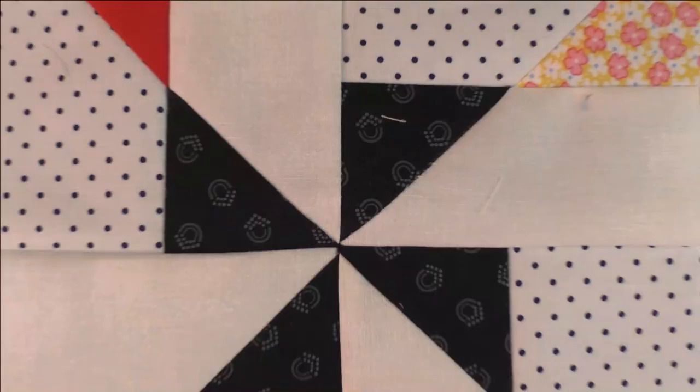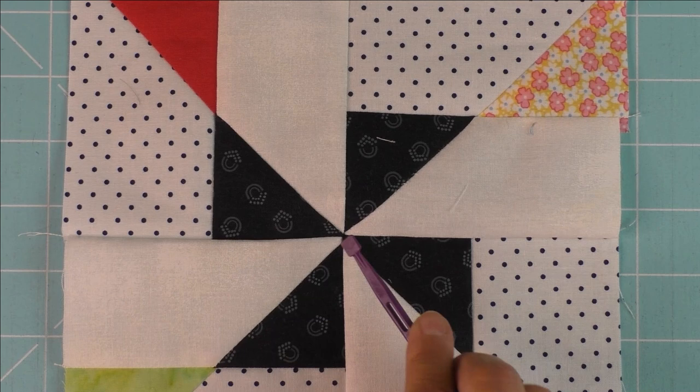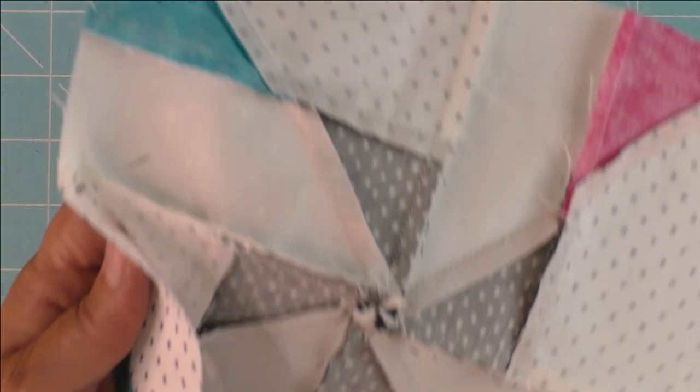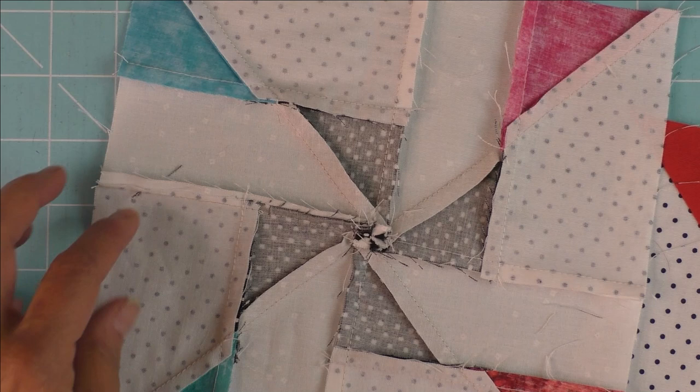Then with your iron, hit it with your iron right there and then press to continue this direction. You press this seam down in this seam up and then it'll be nice and flat.